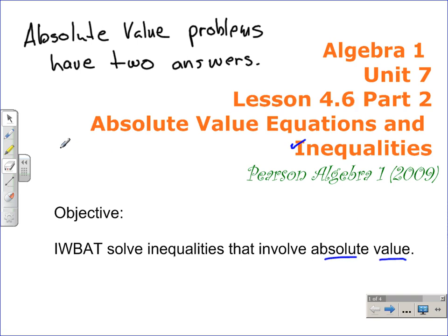Back in Lesson 4.6 Part 1, we learned that the absolute value of x is equal to 2 had two solutions by the definition of absolute value. x would have to be equal to 2, or x would be equal to negative 2.